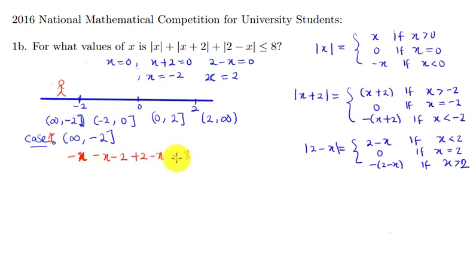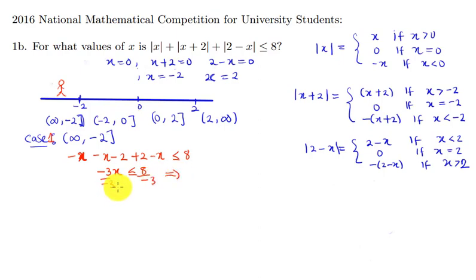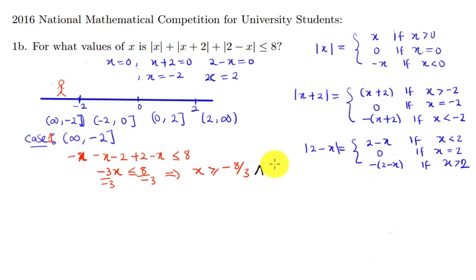Solving negative 3x ≤ 8: dividing by negative 3 reverses the inequality sign, giving x ≥ -8/3. We then take the intersection of this result with the condition x ≤ -2 to find the solution set for this case.